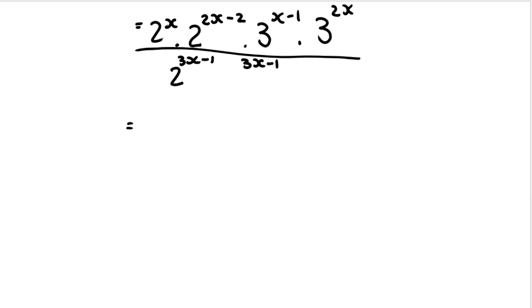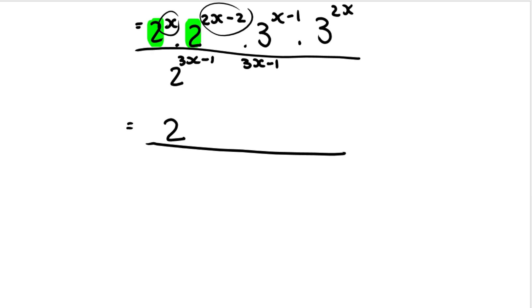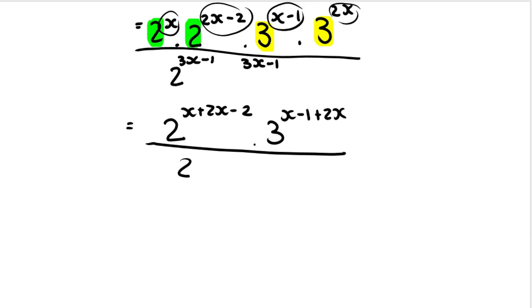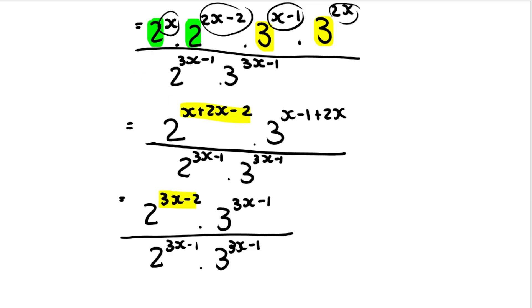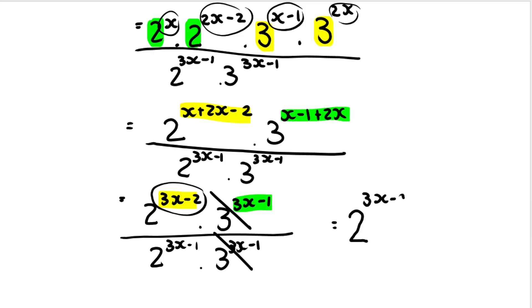If you prefer to do things step by step, when you get to the second step, you can first decide to simplify the top of the fraction. If the bases are the same — two and two — you keep the base and add the exponents: x plus 2x minus 2. You do the same thing for the threes at the top; keep that base and add the exponents: x minus 1 plus 2x, and leave the bottoms as is for now. Once I simplify, I see that three to the power of 3x minus one is exactly the same as three to the power of 3x minus one, so those can cancel. For the twos, keep the base and minus the exponents: 3x minus 2 — the first exponent minus the second exponent in brackets because it's got two terms. Distribute the negative in and we end up with the same answer: two to the power of negative one, which is one half.